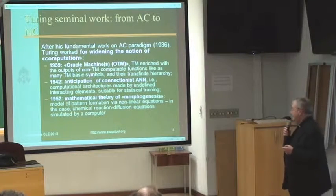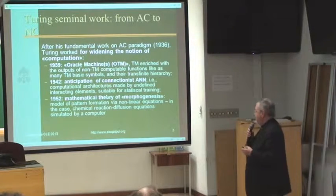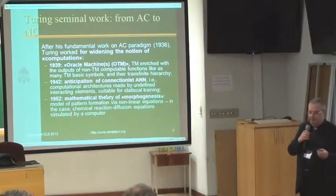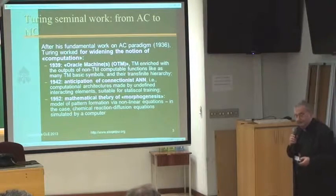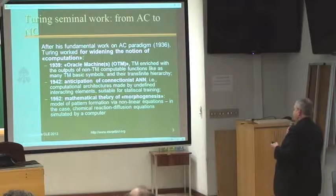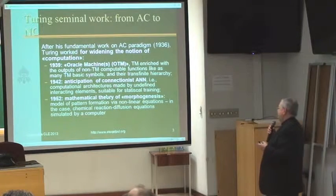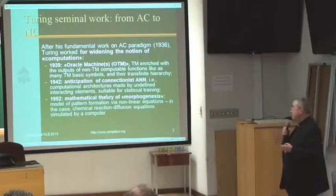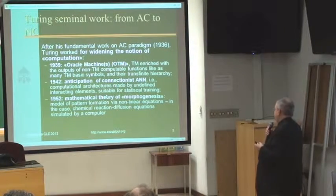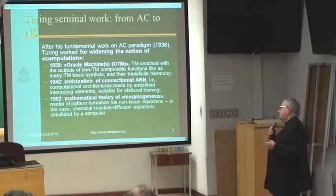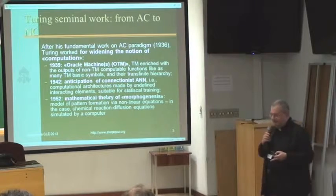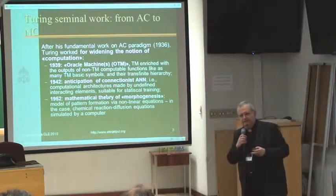In 1939, he published his doctoral thesis in Princeton, with Alonzo Church as director of the doctoral thesis, about the notion of an oracle Turing machine — that is, a Turing machine associated with the outputs of non-Turing-machine-computable functions — and then they transferred the hierarchy of this oracle machine.